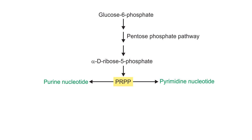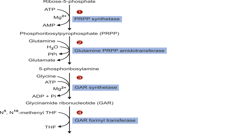The first step in de novo synthesis of purine nucleotide is the synthesis of phosphoribosyl pyrophosphate (PRPP). PRPP is synthesized from ribose 5-phosphate coming from the pentose phosphate pathway. A pyrophosphate group from ATP is attached to the C1 of ribose 5-phosphate, and the enzyme is PRPP synthetase. PRPP is an important intermediate for the synthesis of purine as well as pyrimidine nucleotides.